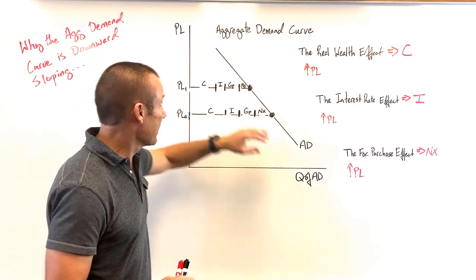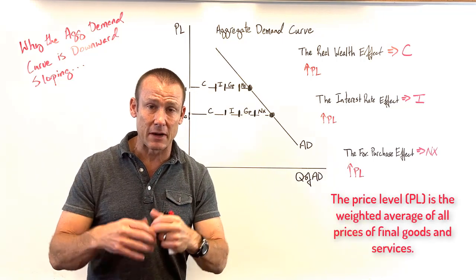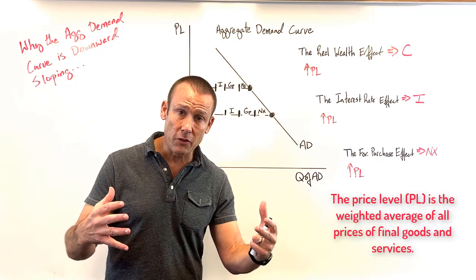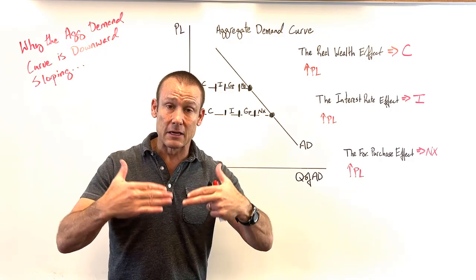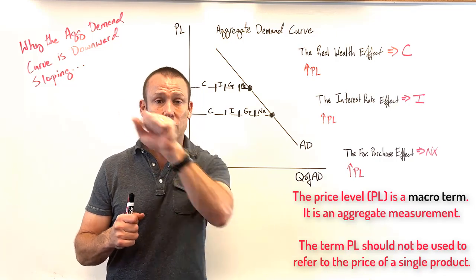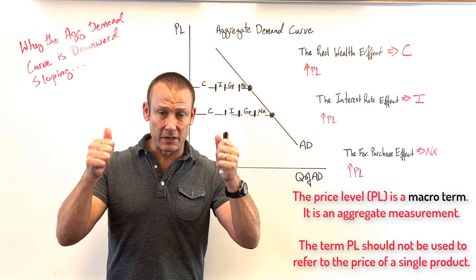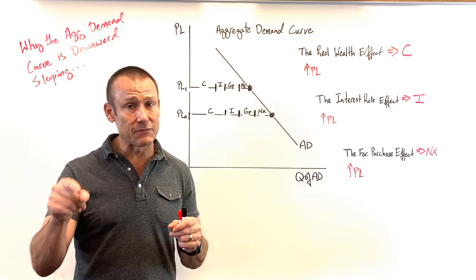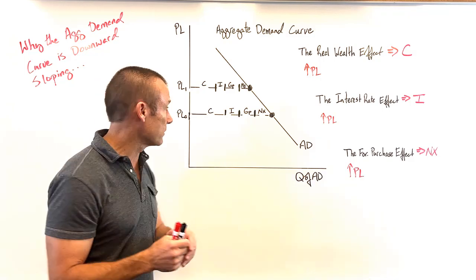That substitution logic doesn't apply to aggregate demand, because here we have the price level — what's happening to prices generally in the economy. It's not just one good's price changing; it's the average level of prices changing across the economy. So it is not the same reason why a demand curve for a single good is downward sloping. PhD economists specifically distinguish why AD is downward sloping for different reasons.